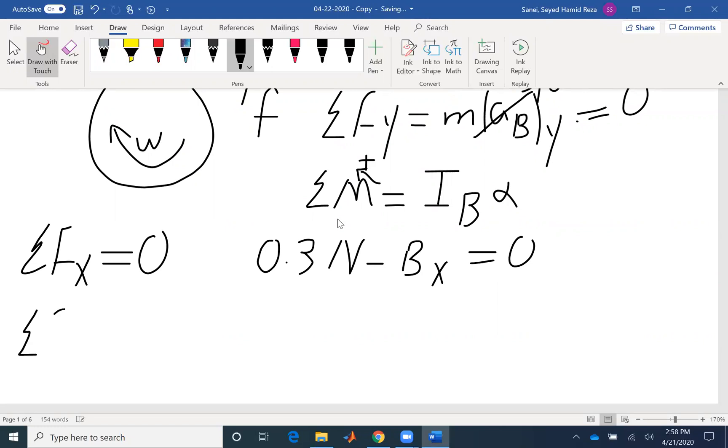Then summation of forces in Y. I have the normal force N. I have the weight acting 60 pounds. And also, I have negative BY equal zero.